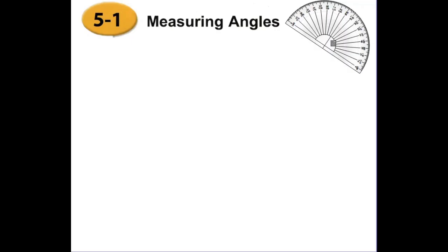Okay everyone, today we will start Chapter 5. The first section is measuring angles. You can check your book page 184. Before starting the lesson, I want to remind you about angles — to form an angle we need two rays.